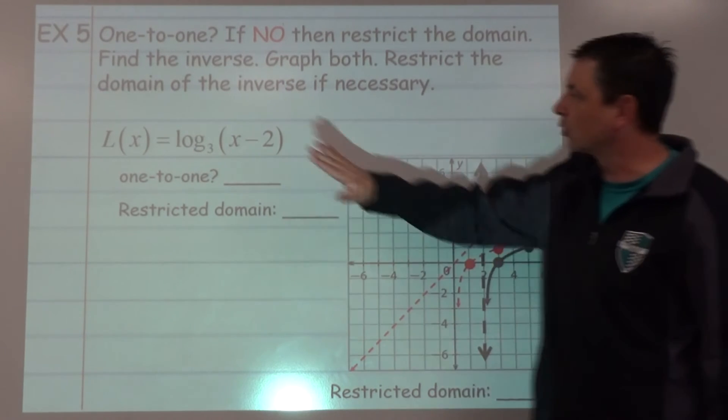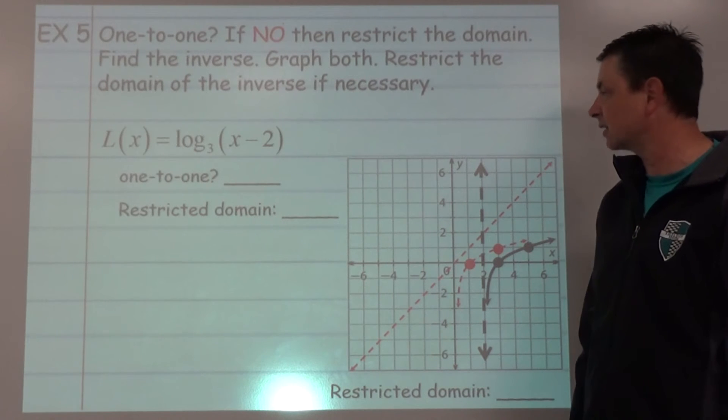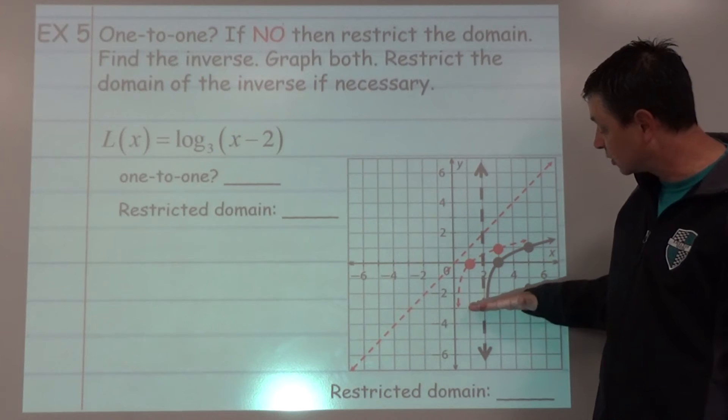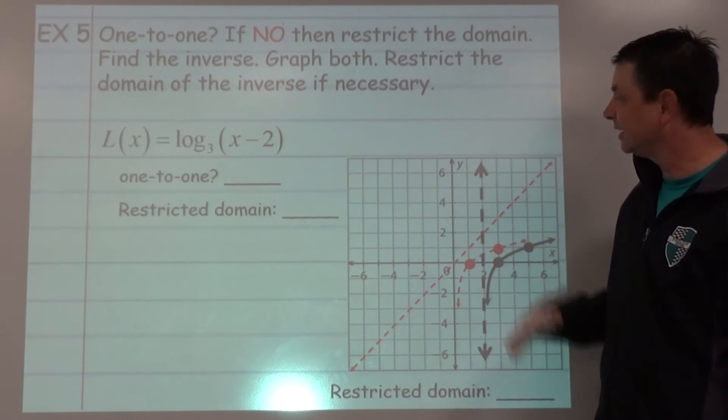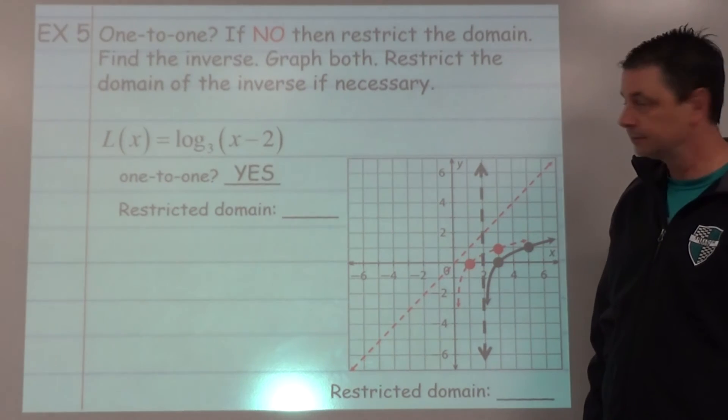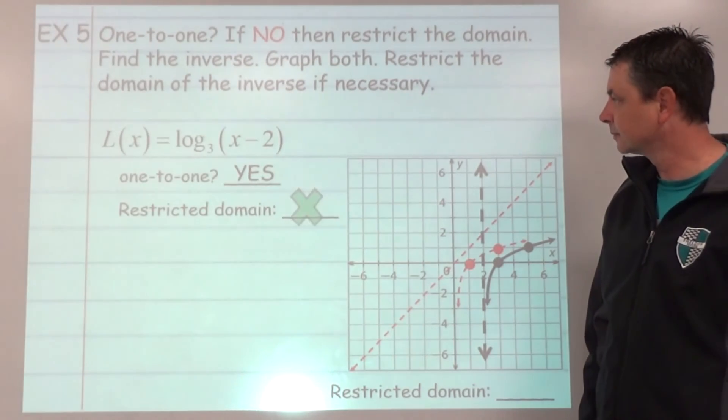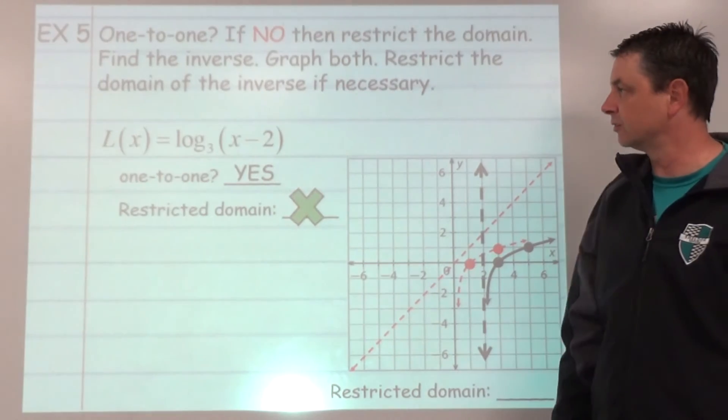There's our graph of capital L of x. Is it 1 to 1? Does it pass the horizontal line test? It definitely does. So that means we do not need to restrict the domain.